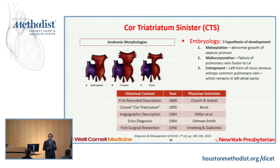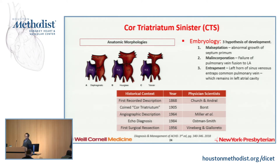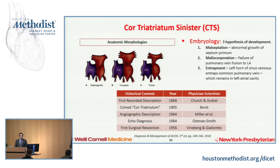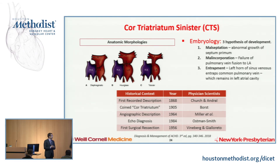When I say sinister, I'm not implying a sinister diagnosis — sinister refers to the left-sided cor triatriatum. There are a handful of reports on cor triatriatum dexter on the right atrium side, which we won't discuss much. Embryologically, there are several theories for why this forms: the malseptation hypothesis of abnormal growth of the septum primum; malincorporation, where the common pulmonary vein doesn't fuse into the left atrium; and the entrapment theory, where the left horn of the sinus venosus entraps the common pulmonary vein. These give rise to three morphologies: the most common diaphragmatic form with a linear membrane, an hourglass abnormality, and a tubular abnormality.